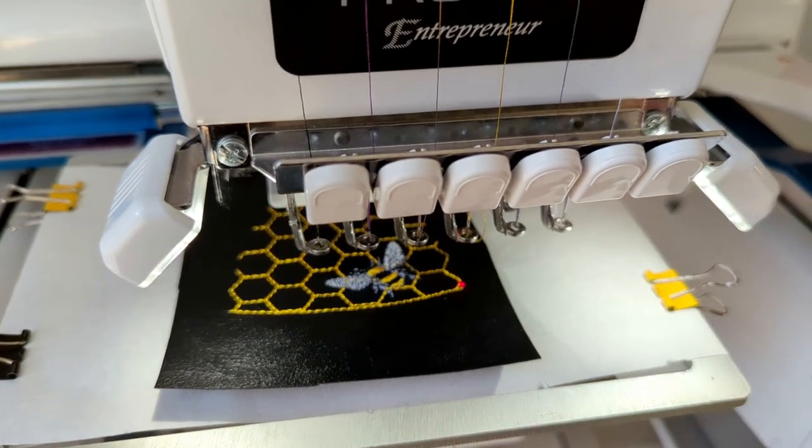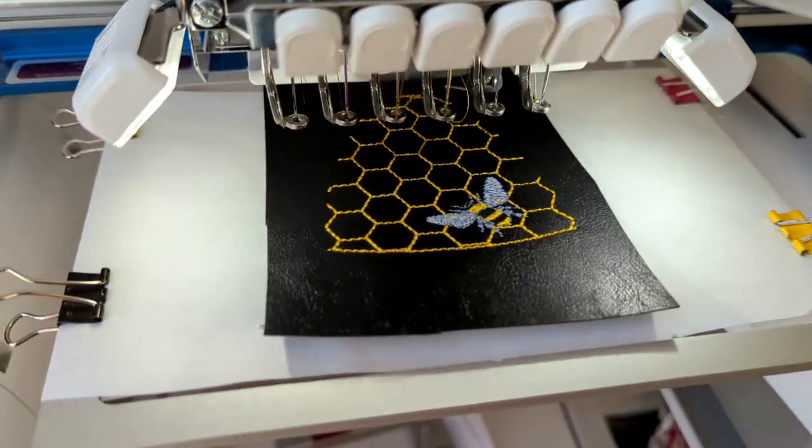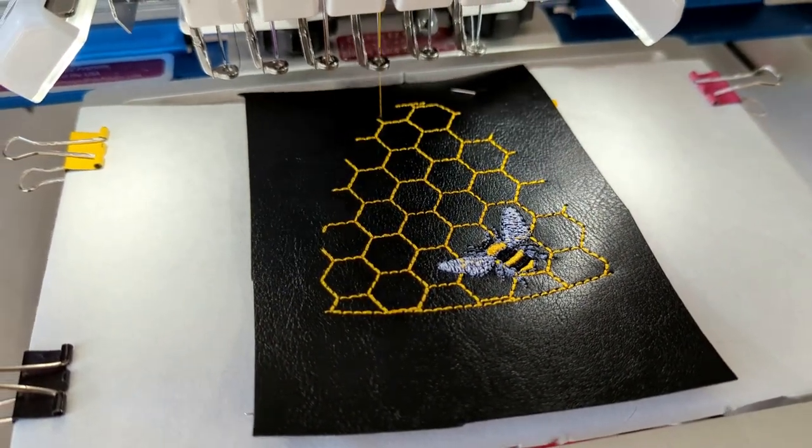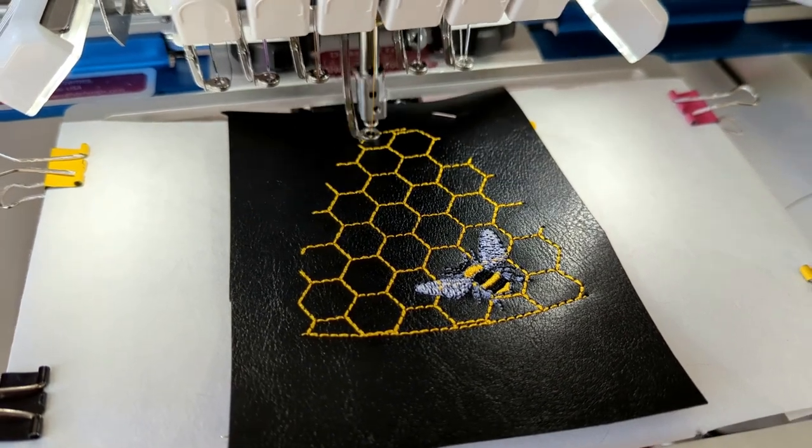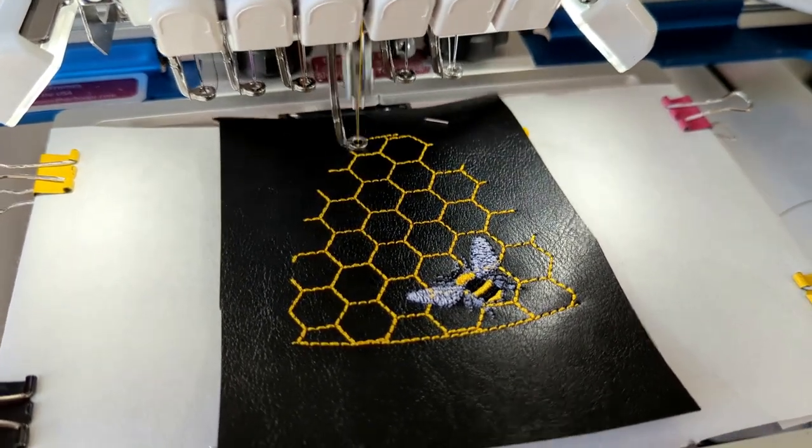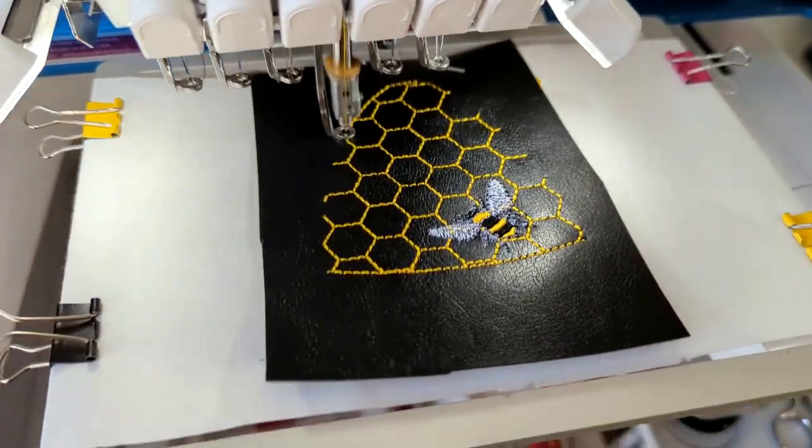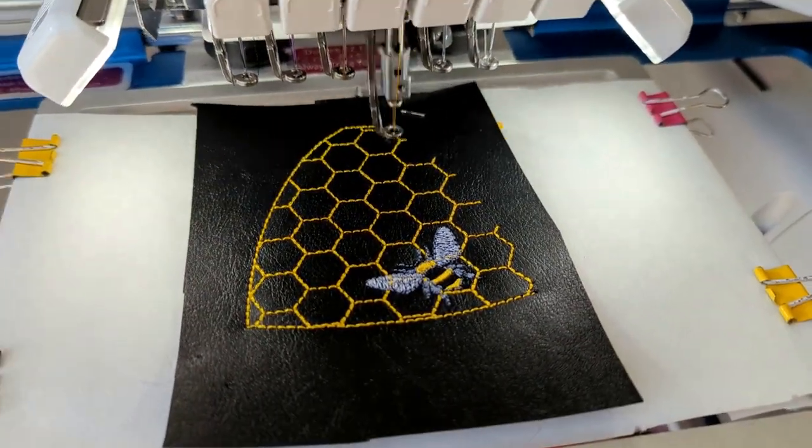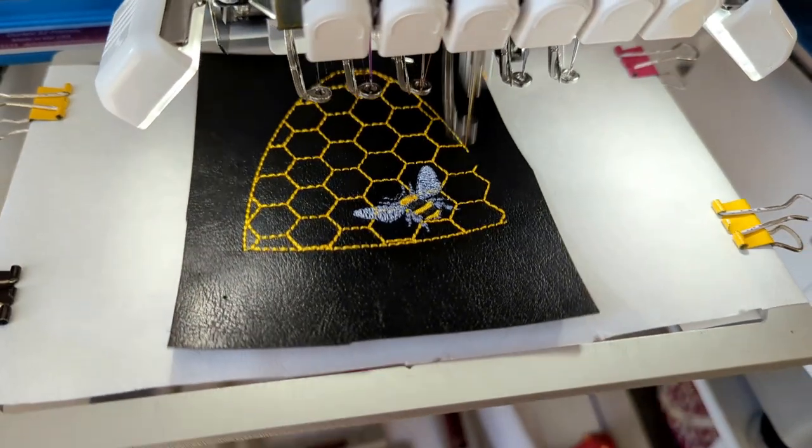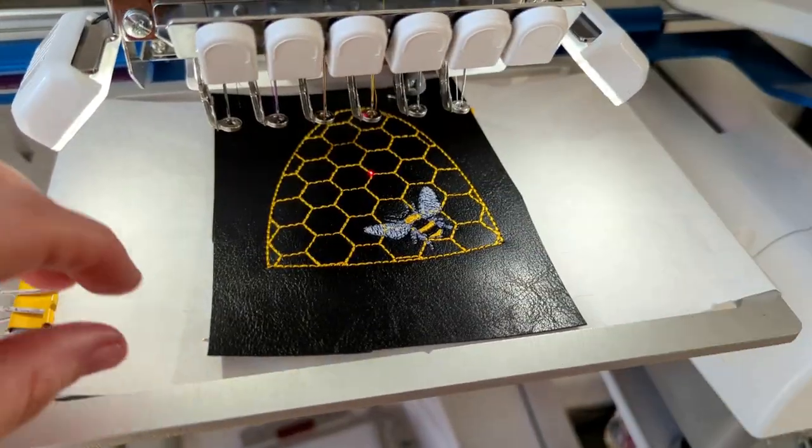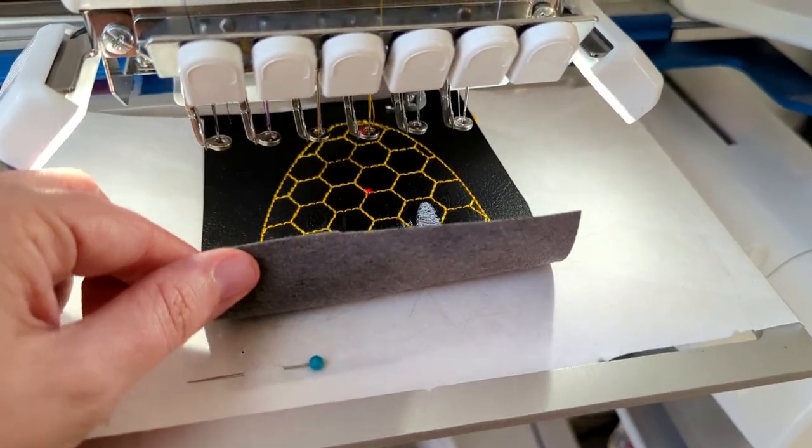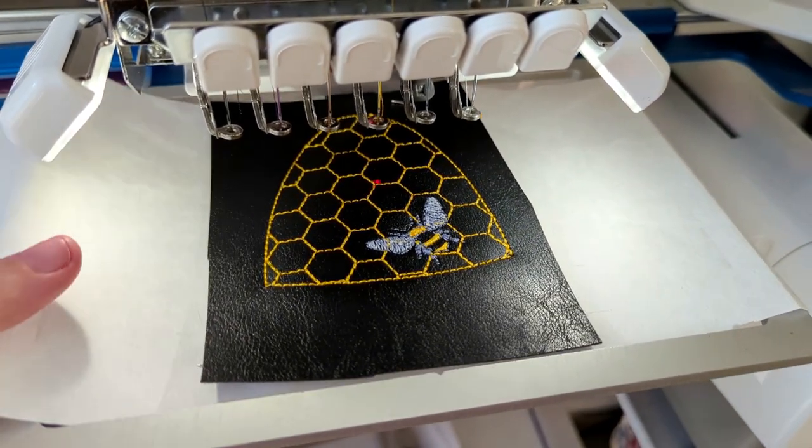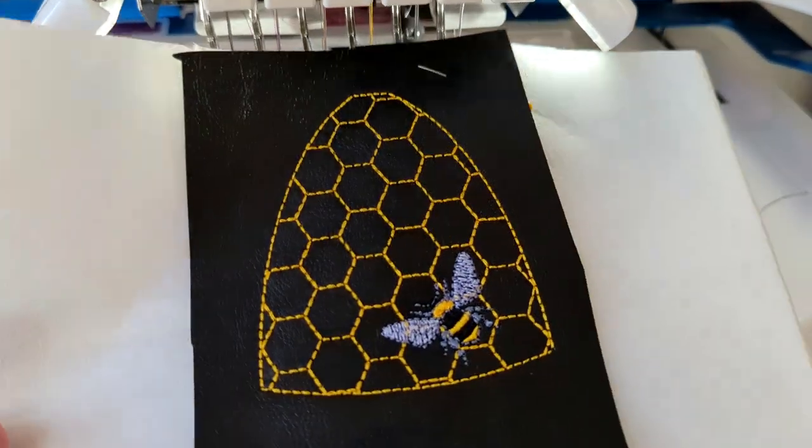The last step is just going to seal up the sides of your key fob with the front and the back of your design. When the last step is finished, you can remove your pins and remove your project from the hoop. Take it to your desk or cutting space and we're going to trim around our design.